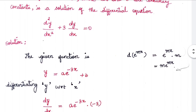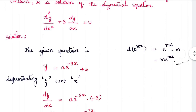For this problem we need to know the simple differential formula for d of e^(mx). When you differentiate any exponential function you get the same result, so d of e^(mx) gives e^(mx). When you differentiate the power mx you get m, so overall d of e^(mx) = m·e^(mx).